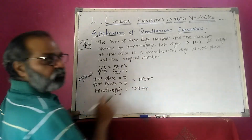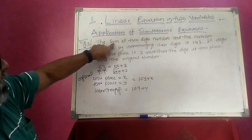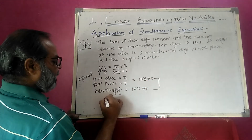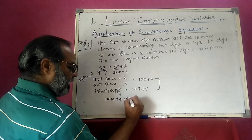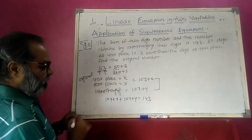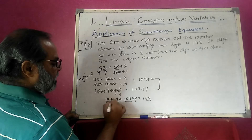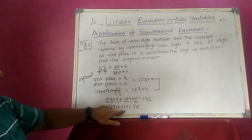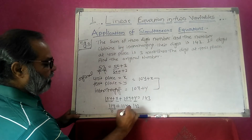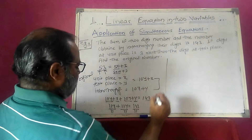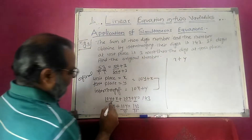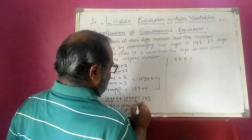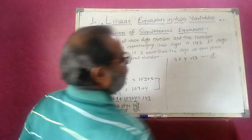The sum of the original number and the interchanged number equals 143: (10y plus x) plus (10x plus y) equals 143. Adding like terms: 11x plus 11y equals 143. Dividing throughout by 11, we get x plus y equals 13. This is the first equation.